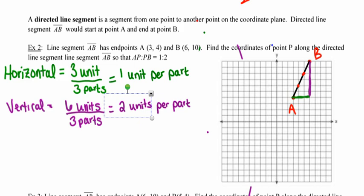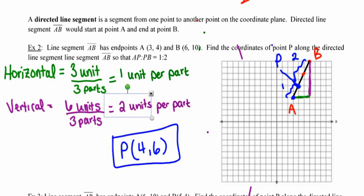Keep in mind that directed line segment AB starts at point A. So I want to start here and have one of those three parts be at the beginning, two of those three parts be at the end, making the location of point P right there where I marked in blue on the graph. If I go ahead and count the number of units, I find that the location of point P has coordinates (4, 6).